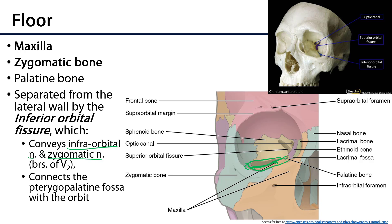The inferior orbital fissure is also a continuity between the orbit and the pterygopalatine fossa. That pterygopalatine fossa is where one can find the pterygopalatine ganglion, which is the peripheral parasympathetic ganglion that serves the lacrimal gland. We can discuss that in more detail when we discuss the lacrimal gland.